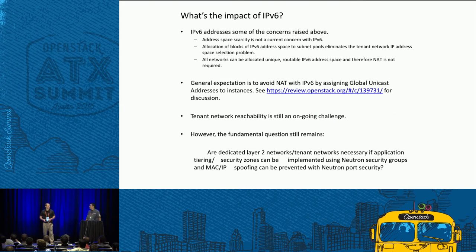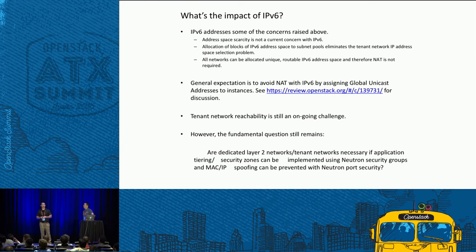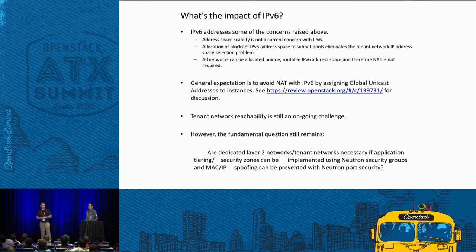If you're only deploying cloud native workloads, the routing feature gap might be a non-issue. But if you're deploying legacy applications where you don't know exactly what connectivity they require, this could be a very real problem. So what's the impact of IPv6 on everything we've said? Address space scarcity is not a concurrent concern with IPv6. Because IPv6 address space is so plentiful, there's no reason we can't allocate large blocks to subnet pools, which effectively eliminates the address space selection problem for tenants.